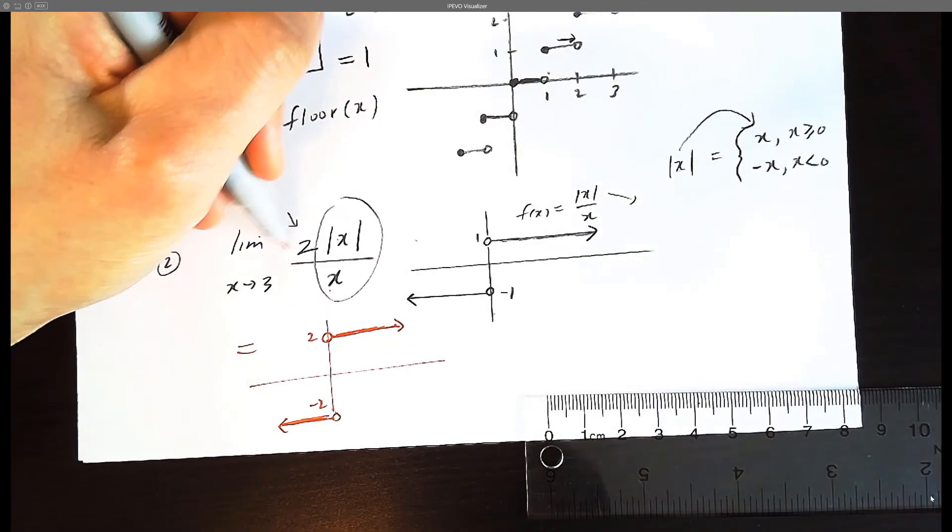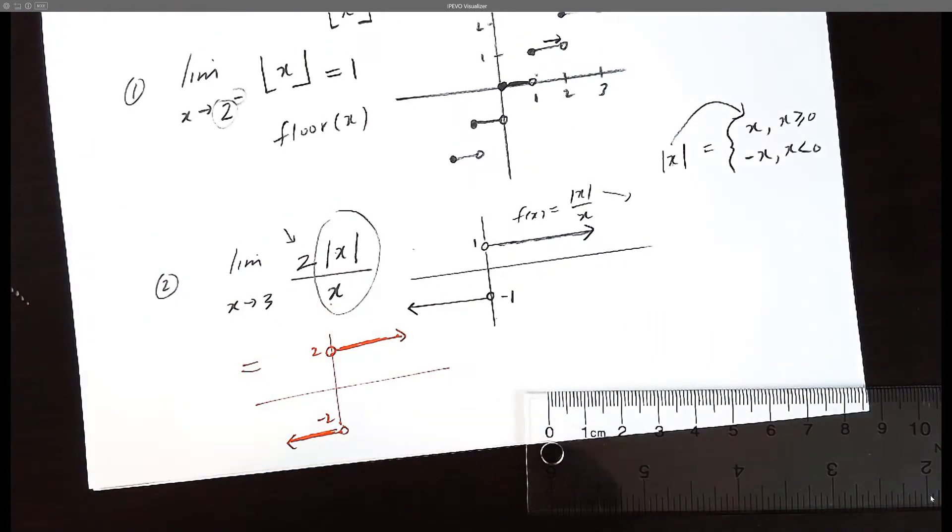If this was a negative two, everything would be flipped because that would be another transformation.